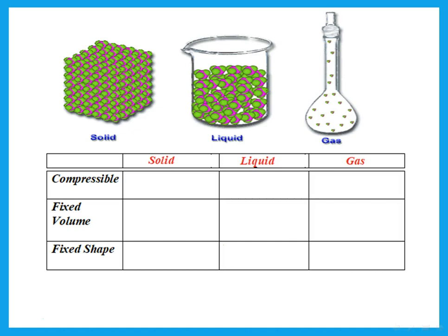Which one is compressible? The word compressible means bringing the particles nearer to each other. In order to do that, they should originally be a bit far apart. So the only ones that are compressible are the particles in a gas. Which ones have fixed volume? The solid has a fixed volume, and the liquid also has a fixed volume. But gases take the volume of the container, or fill the whole container. The only one that has a fixed shape is the solid. Liquids and gases will take the shape of the container.